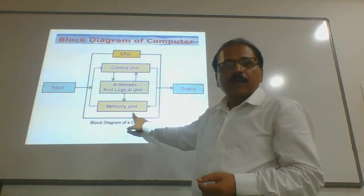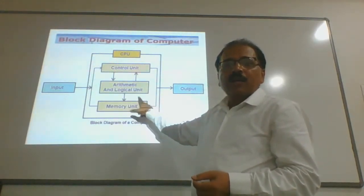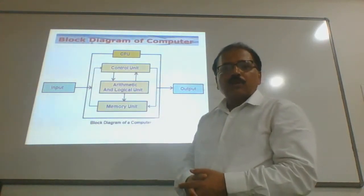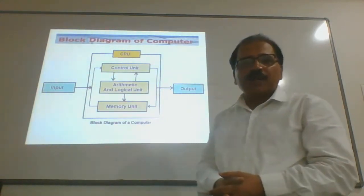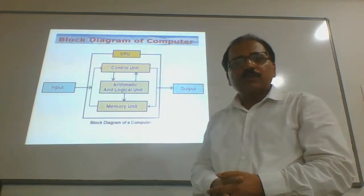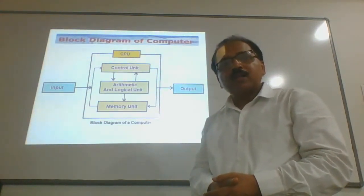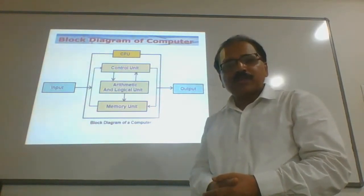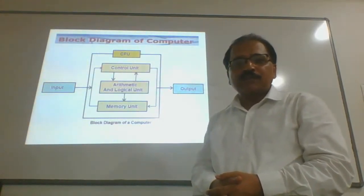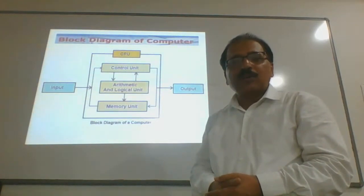Whenever any data is required by the CPU, that data is supplied by the memory unit. Data is processed by ALU and managed by control unit. After processing, the processed data or result of that particular data is stored back inside the memory unit.